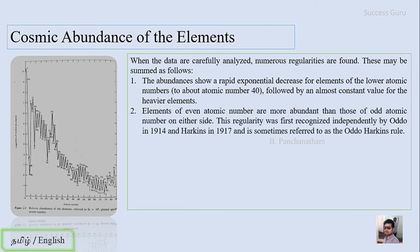Elements of even atomic number are more abundant than those of odd atomic number on either side. This regularity was first recognized independently by Oddo in 1914 and Harkins in 1917 and is sometimes referred to as the Oddo-Harkins rule.